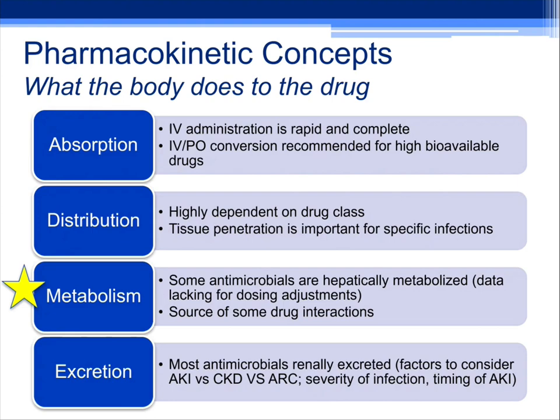The next concept is metabolism. Some drugs are hepatically metabolized, and data on dosing adjustments for hepatic impairment is really lacking — metronidazole is one rare example with a Child-Pugh score dosing recommendation. This is mainly where our drug-drug interactions originate, particularly with CYP3A4 drugs like voriconazole and other azoles. Last is excretion: the majority of our antimicrobials are renally excreted. Factors to consider include AKI, CKD, augmented renal clearance in younger trauma or burn patients, severity of infection, and the timing of AKI — which we'll get into in more detail.